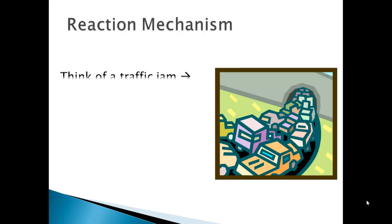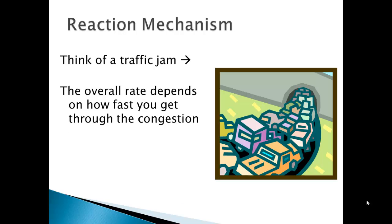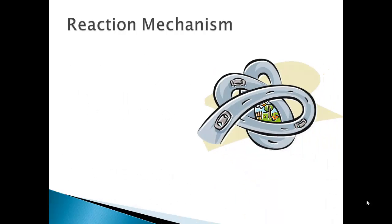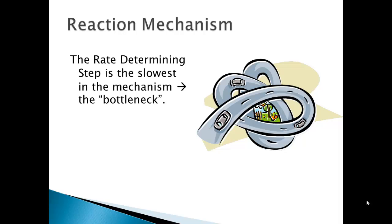As a comparison, think about a traffic jam. If you're trying to go somewhere, your overall rate of how quickly you'll get there depends a lot more on how fast you get through that congestion than how fast you were going before or after it. If you could speed up the slowest part of your trip, that would have the greatest effect on getting there faster. That slowest step is the bottleneck in the reaction mechanism — it has the most effect on the overall reaction rate.